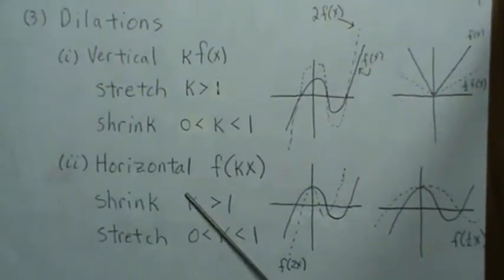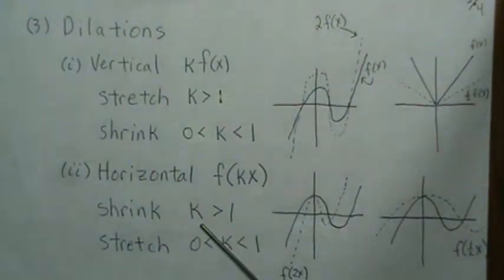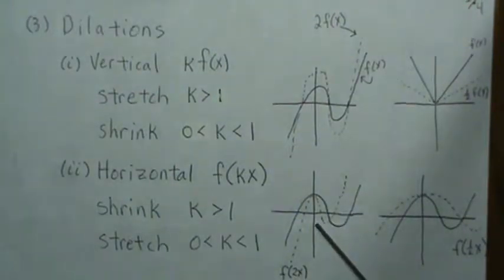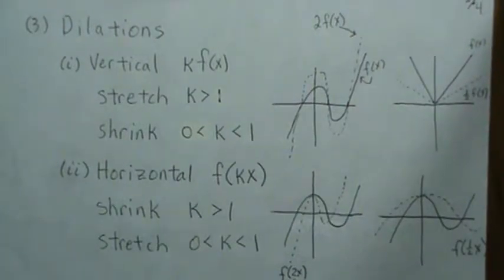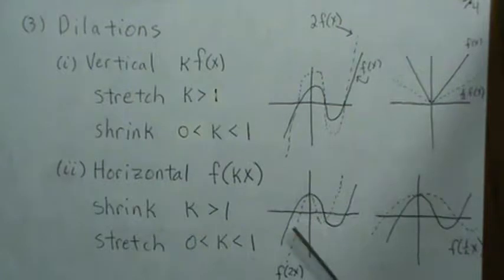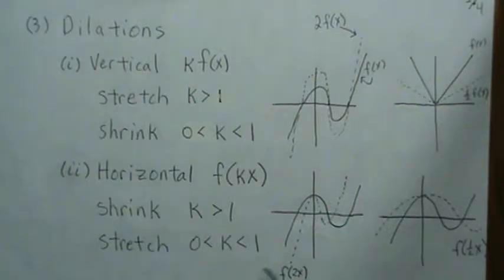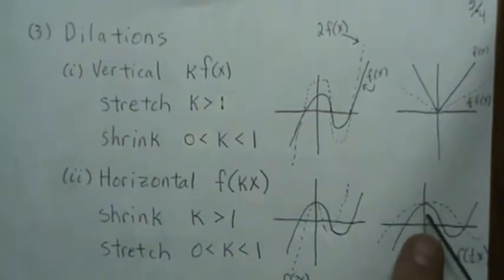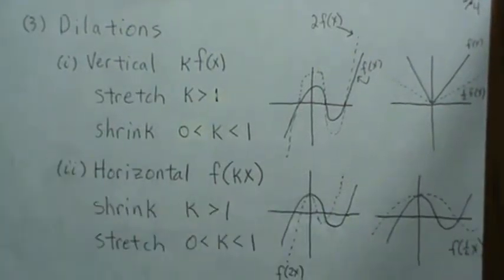Horizontal dilations come inside the function as f(kx). If k is greater than one it shrinks toward the y-axis, like f(2x). If k is between zero and one it stretches horizontally, like f(x/2). You get the original shape but stretched out horizontally.